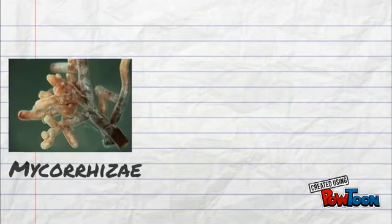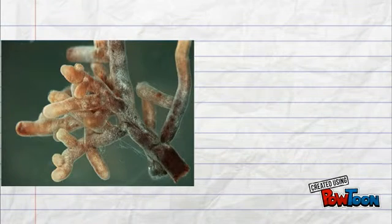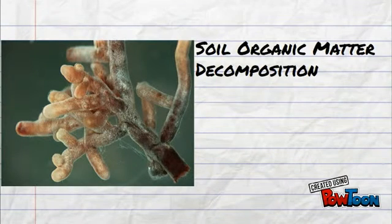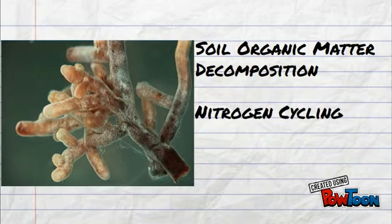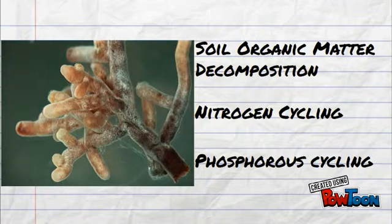An example in plants is the relationship between mycorrhizae and the roots of vascular plants. Mycorrhizal fungi have an effect on all kinds of environmental processes, the most researched of which are its effects on soil organic matter decomposition, nitrogen cycling, and phosphorus cycling. However, we're going to discuss the implications of the mycorrhizae–plant symbiosis in relation to phosphorus cycling.